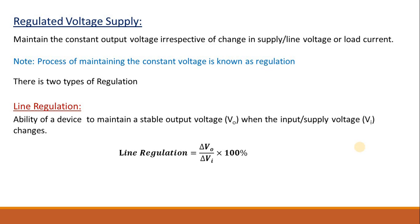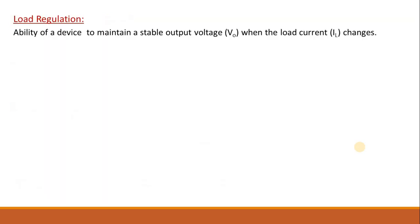From this equation it is clear: if you want a constant output voltage that does not change with the change in input voltage, then line regulation has to be zero percent. Similarly, we can define load regulation. Load regulation is the ability of a device to maintain stable output voltage when load current changes. Load current will change if you change the resistance of the load. Load regulation equals the change in output voltage divided by the change in load current.